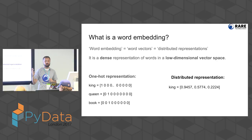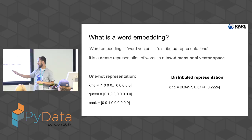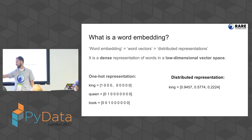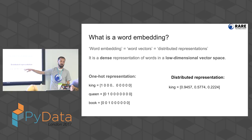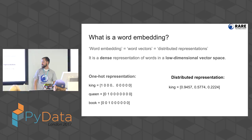A word embedding or distributed representation is much shorter — only three dimensions, like 0.94, 0.57, 0.22. I don't have a million dimensions anymore, just three. It's a much denser, lower-dimensional representation. The reason it's called distributed is because the meaning is distributed across all three dimensions. Here, the meaning of king is distributed across all three, and the vector for queen will be quite similar, so I can do dot products and similarity measures to see if words are related.